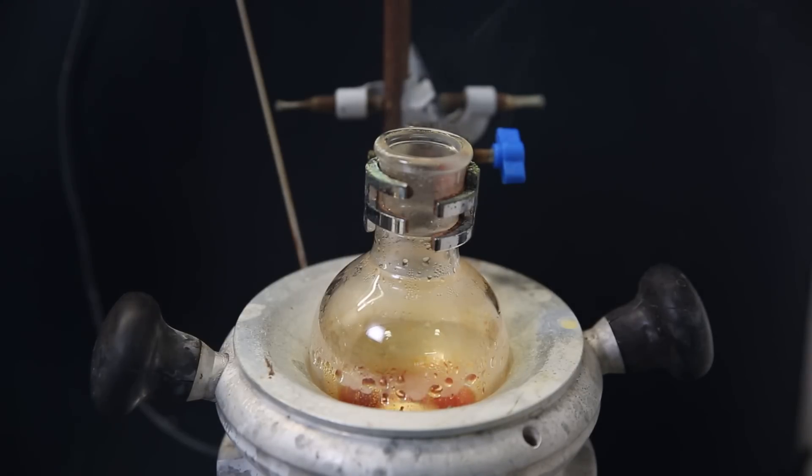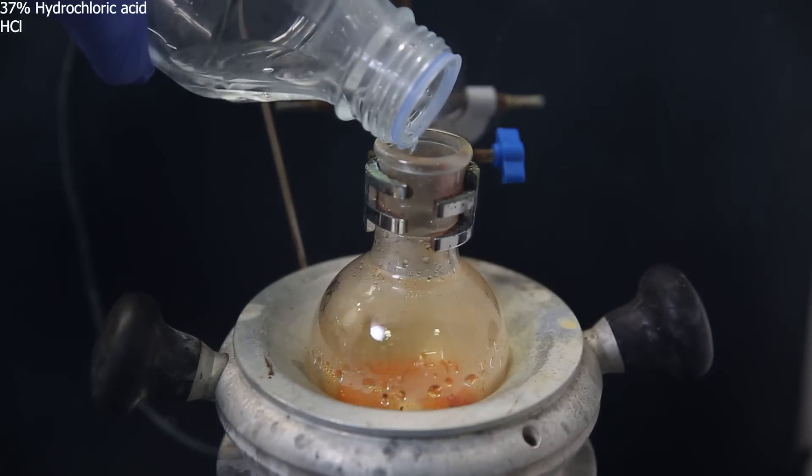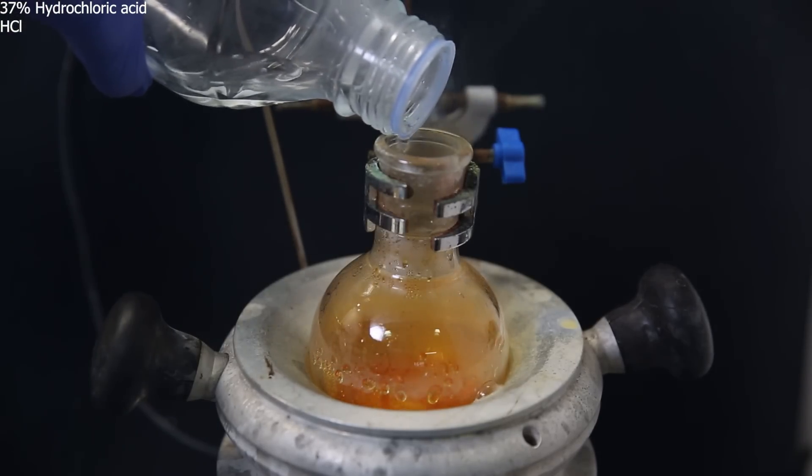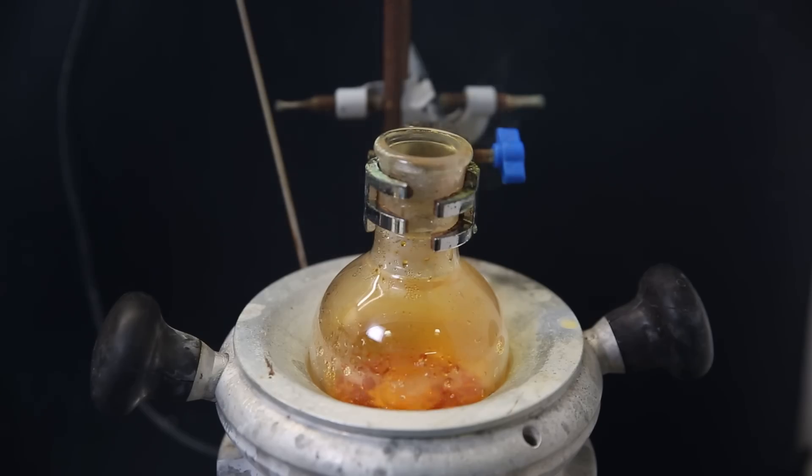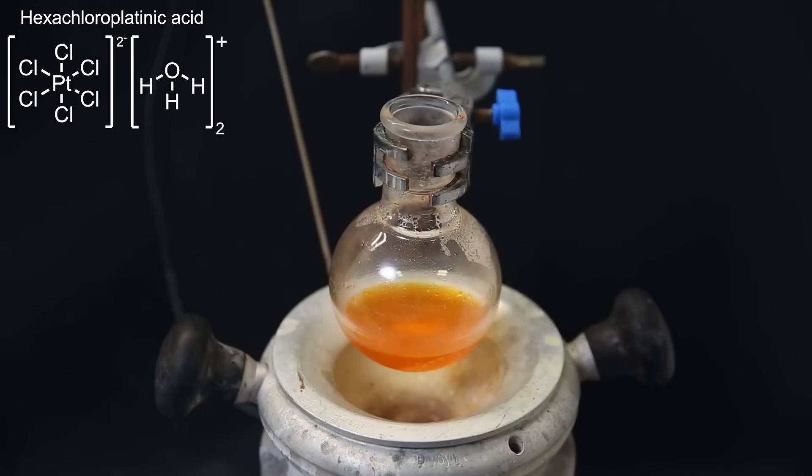When all of the platinum had dissolved, it had also concentrated down because it was boiling, and it is a red solution. To remove any remaining nitric acid and dissolved nitrogen oxides, I add some 37% hydrochloric acid, and we see some orange nitrogen dioxide bubble out immediately. I do that twice and distill part of it off to distill out all of the nitric acid. When that is done, I am left with a nitrogen-free solution of hexachloroplatinic acid.